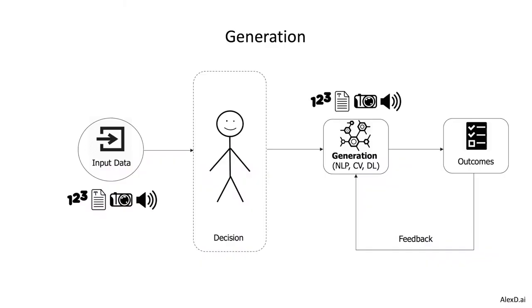You will use natural language processing, computer vision — it doesn't matter. But here we are changing the action side, not the decision. And as you can see, the feedback comes not to the decision but to the action, because what we want to improve is the generation of the action and not a decision in this case.